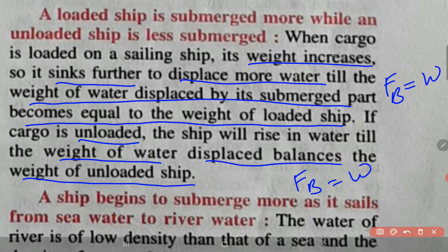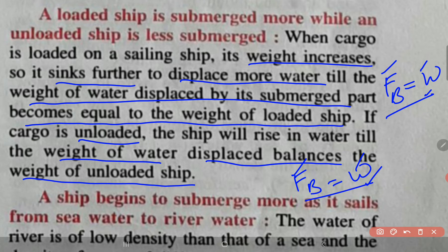If the cargo is unloaded, the ship will rise in water until the weight of the water displaced by the ship balances the weight of the unloaded ship. Under this condition also, the upthrust will be equal to the weight of the ship. Obviously, the upthrust for the loaded ship is more than for the unloaded ship, and this weight will be more than that weight, but under the condition of flotation, upthrust is equal to the weight of the floating object.